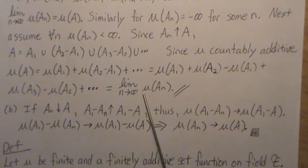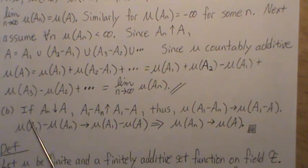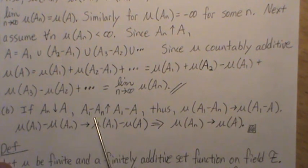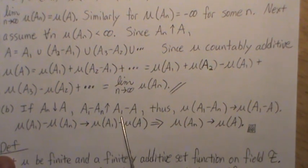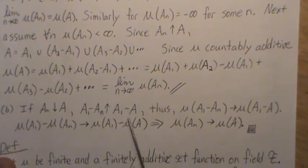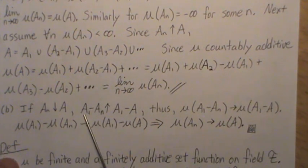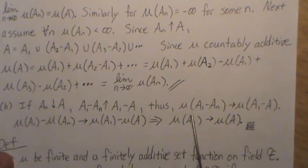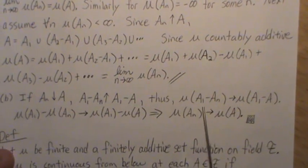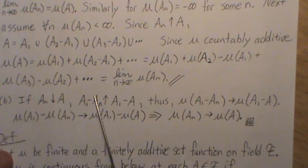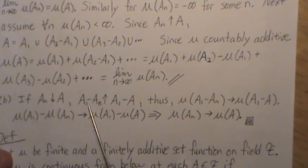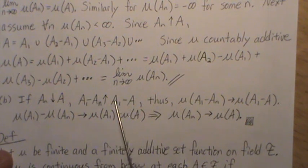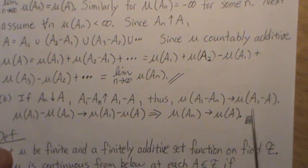That's what we wanted to show. Now to prove Part B: if An are decreasing sets to A, that means A1 minus An is increasing to A1 minus A. Since we've assumed A1 is finite, these are all finite, and since it's increasing, we just proved in Part A that the limit of this equals the measure of A1 minus A.